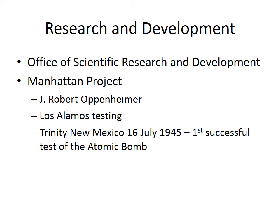Part of the wartime financing went to research and development — principally the Manhattan Project, operationally under the control of J. Robert Oppenheimer, developing the nuclear weapon through the splitting of the atom's nucleus. This drew partly from Einstein's theory of relativity. The U.S. began testing in Los Alamos as early as 1943, and on 16 July 1945 in Trinity, New Mexico, had the first successful test of an atomic bomb.